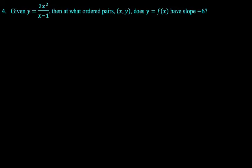Next problem. Given y equals 2x squared over x minus 1. Given that, then at what ordered pairs x, y, I write some weird sounding problems when I read them back. Does y equal f of x have a slope of negative 6? All right. So slope of negative 6 means the derivative is going to be negative 6. So I need to find the derivative.